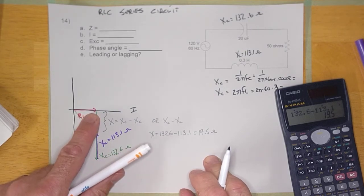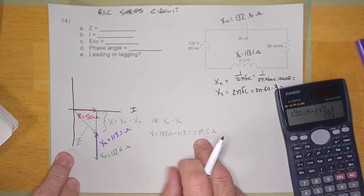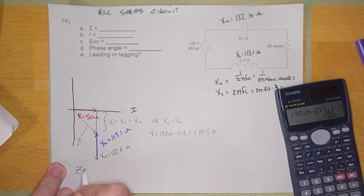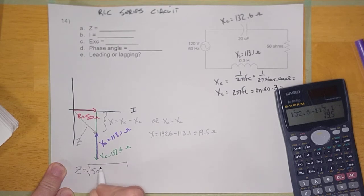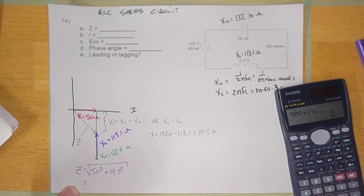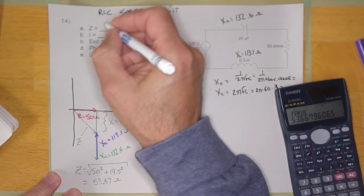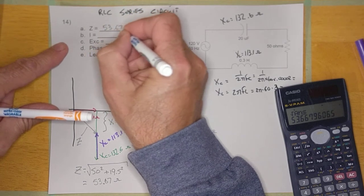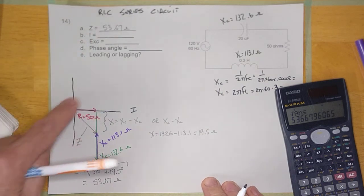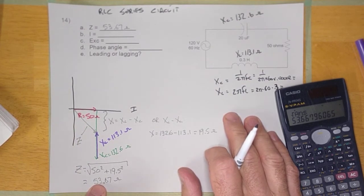So now we have an R of 50 ohms, and we have an X of 19.5 ohms — that little side right there. That allows me to calculate Z, or the impedance. The impedance of this circuit is going to be the square root of 50 squared plus 19.5 squared, which equals 53.67 ohms. And there we calculated it using the Pythagorean theorem.